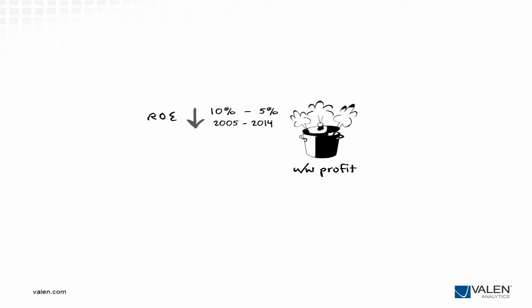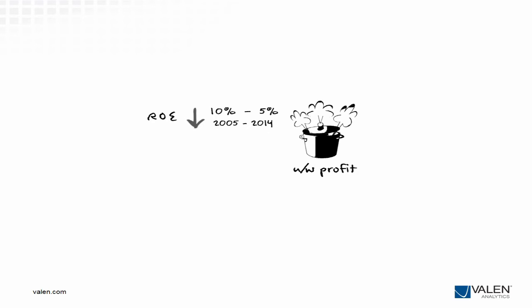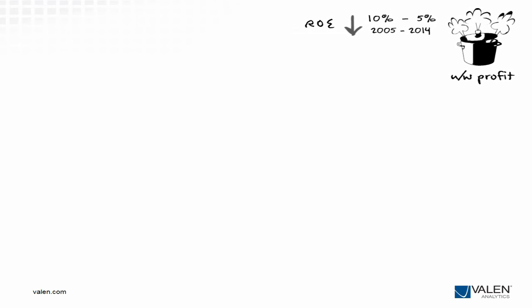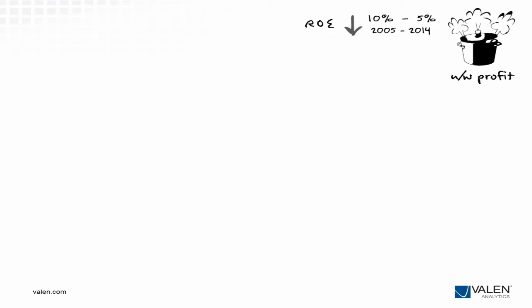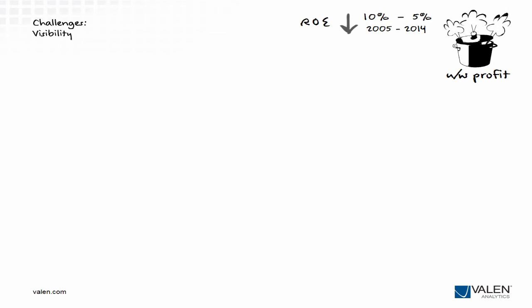You've already got a highly competent team of hardworking professional underwriters. So for executives like you, the big question becomes: how do I make my underwriting operation profitable without creating massive disruptions with my people and my processes? There are three core challenges standing in the way of generating reliable underwriting profits: a lack of visibility, using the right pricing approach, and inertia.